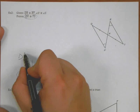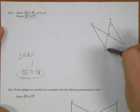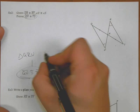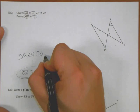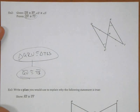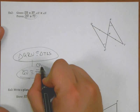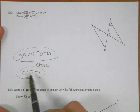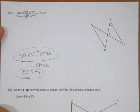So if I could maybe show that triangle QRU is congruent to triangle TRS, if I could show that, then I know because corresponding parts of congruent triangles are congruent, then these two things are congruent as well.